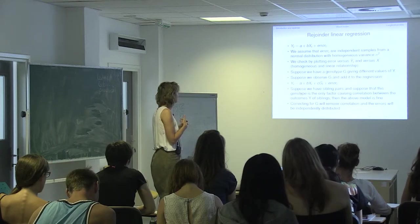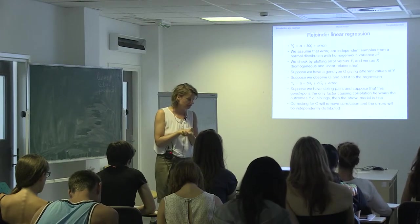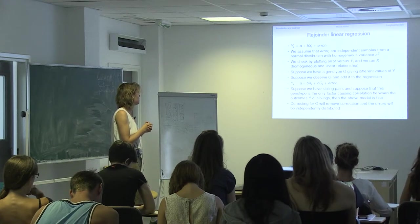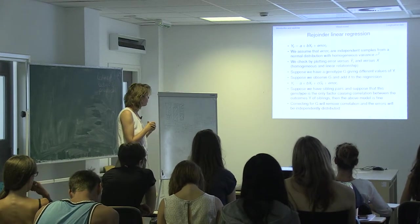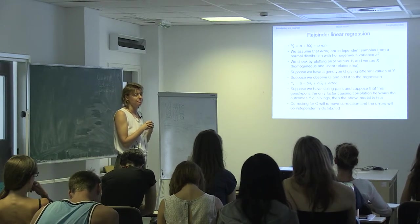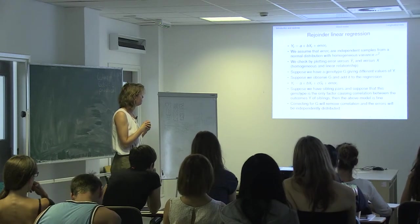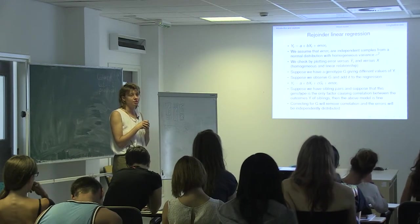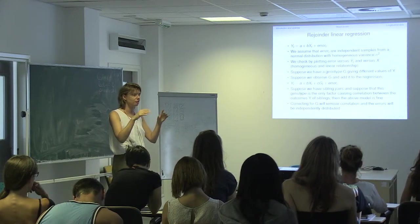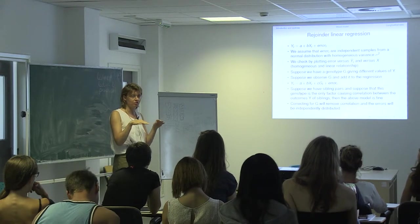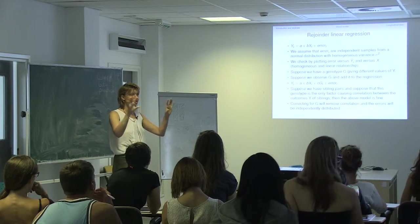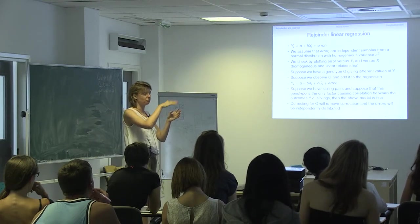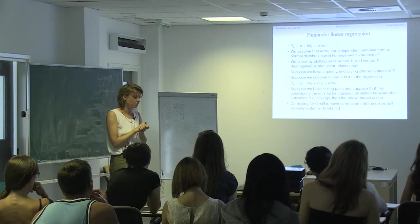Then back to linear regression. We have seen these models — skipping the structure of individuals within families, we have single individuals in our dataset. We have one covariate, an intercept A, and B measures the effect of the covariate on the outcome Y. We discussed that this error term should come from a normal distribution and the variance should be constant. If we make a plot of Y-fitted versus the residual or the covariate versus residuals, it should all be smoothly distributed around the line.